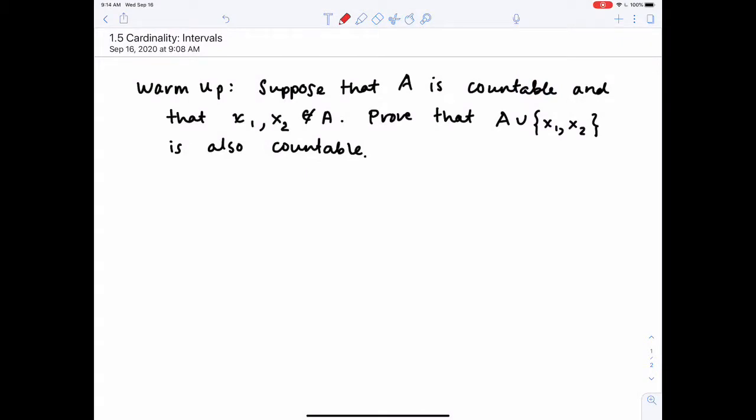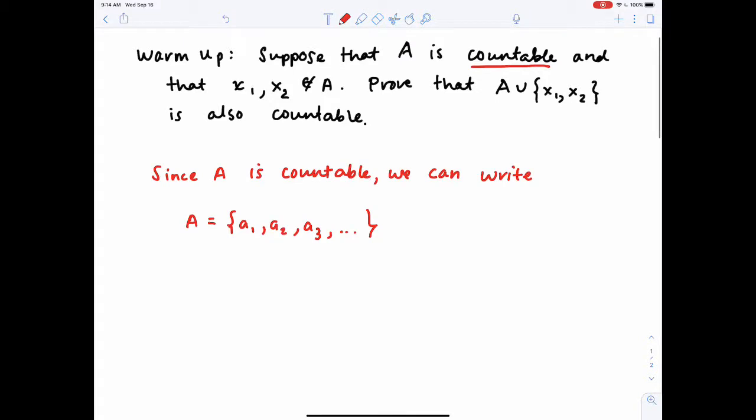So the big thing here is, since A is countable, it means we can list its elements out, we can enumerate them. So since A is countable, we can write A equal to A₁, A₂, A₃. This would just be using the bijection that we have from the natural numbers to A itself, that would give us an enumeration of our elements. Now from there, I'm now trying to prove that I have a countable set still, even when I add only two points. So that means I need to define a map that goes from the natural numbers to my new set that has x₁ and x₂ added in.